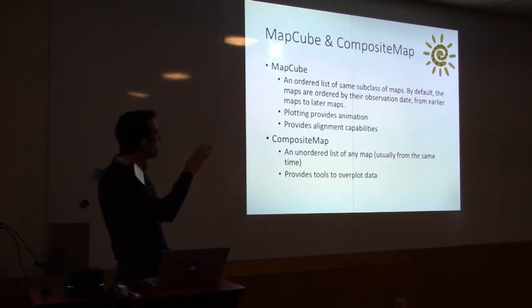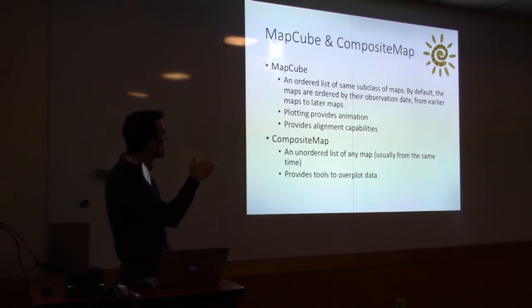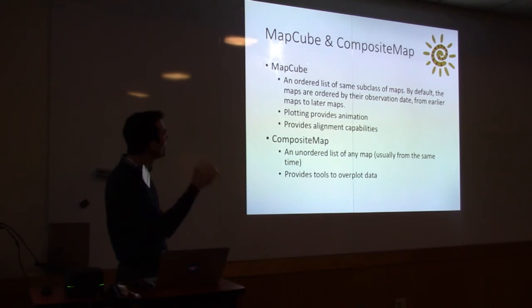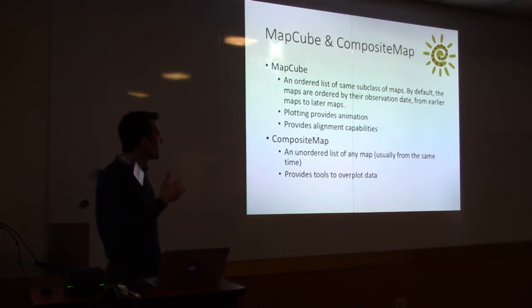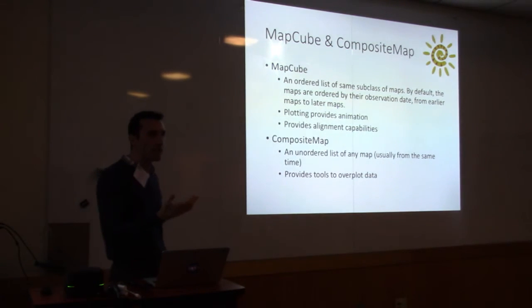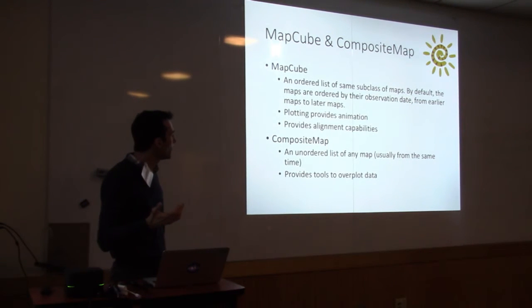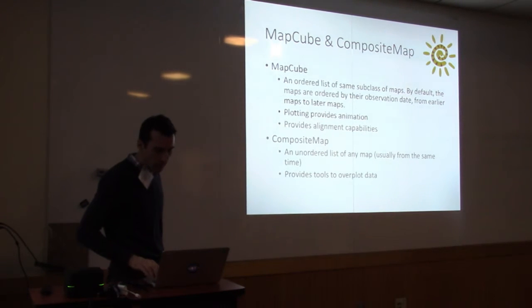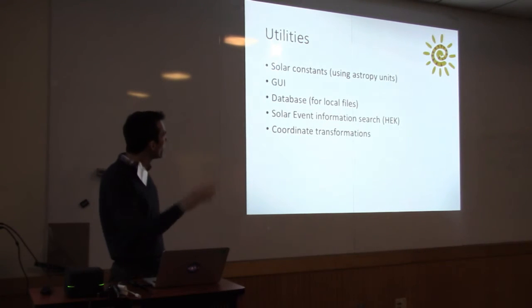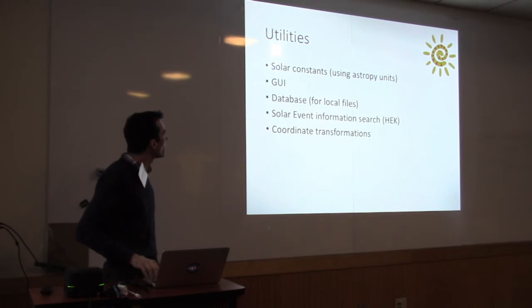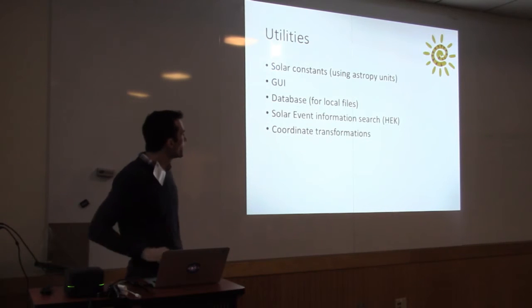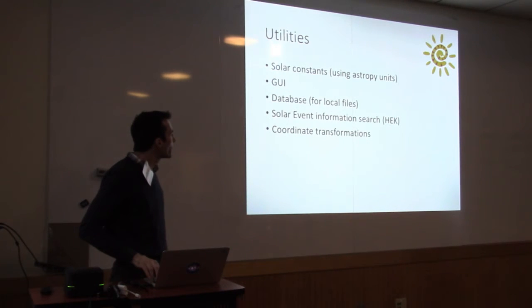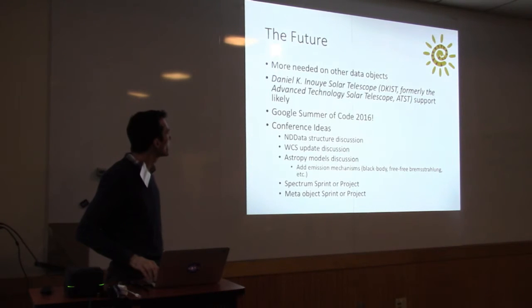We also have MapCube and CompositeMap. MapCube is a subclass where you can have an ordered list of the same subclass of maps — basically a number of observations over time. That gives you capabilities like animation and alignment. CompositeMap is the idea of having many different observations at the same time that you want to overlay and look at simultaneously. We also have solar constants, a GUI we're working on, the database I already mentioned, an interface to the HEK which is the solar event information search, and coordinate transformations, just to name a few.